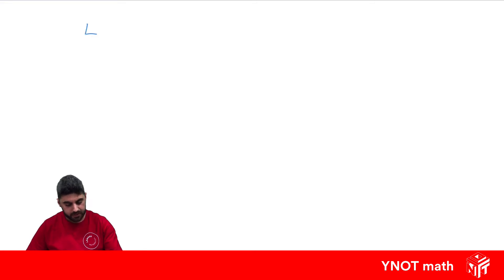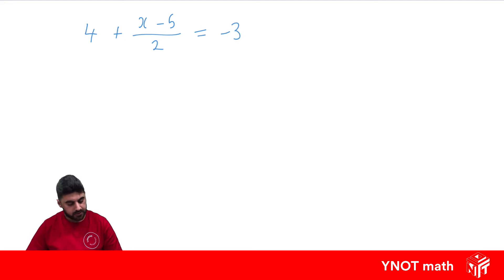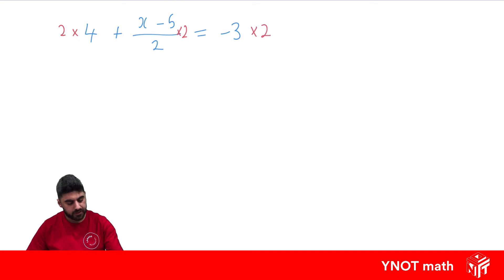What about 4 plus x minus 5 over 2 equals minus 3? Here we have one fraction and a couple of other terms. The best thing we can do is multiply every single term by the denominator. The 2 over 2 cancels out, so we get 2 times 4 which is 8, plus the numerator x minus 5, and minus 3 times 2 is minus 6.